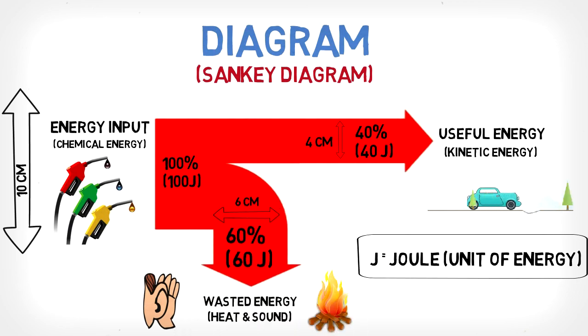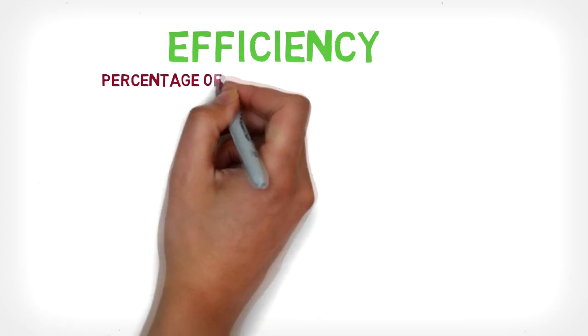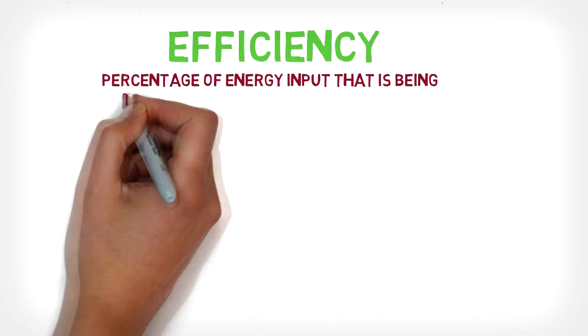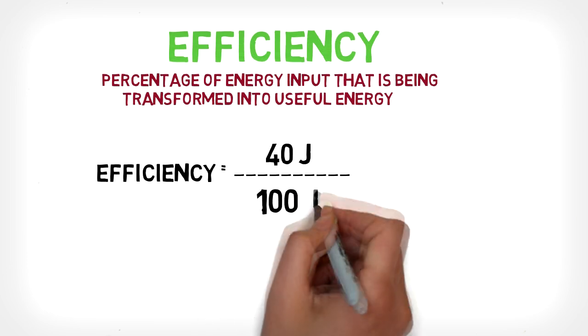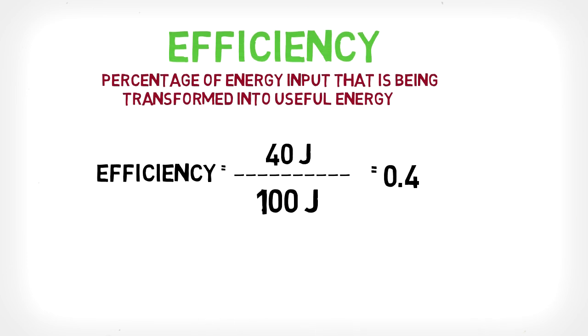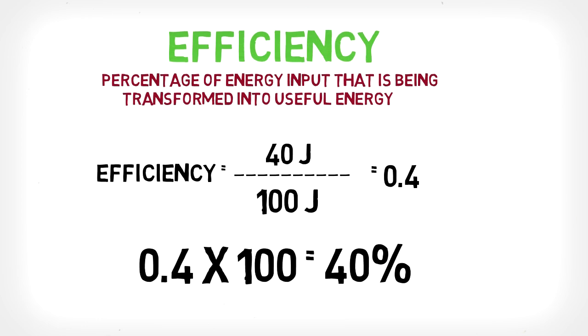Using this type of diagram will make it very easy for you to calculate the efficiency, which is the percentage of the energy input that is actually being transformed to useful energy. To calculate the efficiency, you take the amount of energy output that is useful for you and divide it by the total energy input. This will give you an answer in decimal form, and if you multiply it by 100, it will give you the percentage.